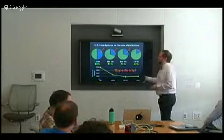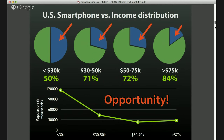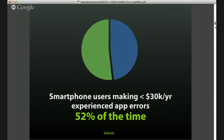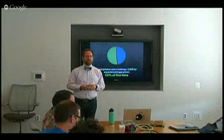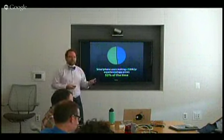Looking at census data, there's a huge opportunity in the non-smartphone world — reaching people on feature phones. One stat from Pew Research that blew my mind: smartphone users making less than $30K a year experienced app errors 52% of the time. They downloaded the app, but it won't run on their device. So why is that?